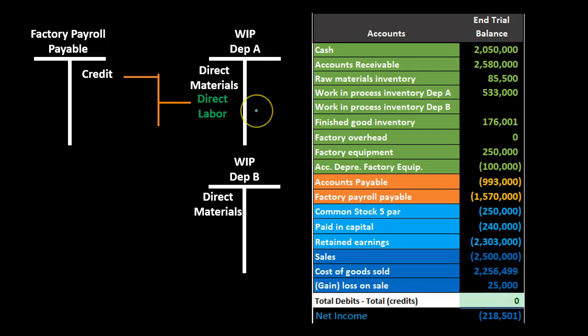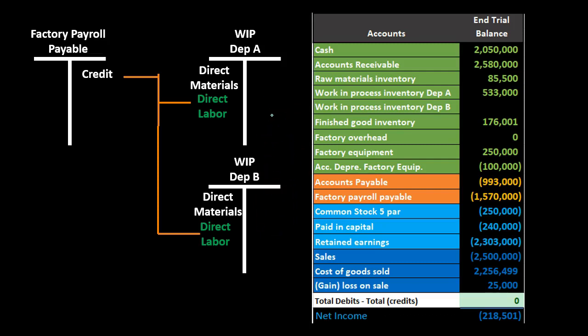Most of the labor will probably go to Department A, since that's where most of the work is done. In a process cost system, labor may be relatively small because the process may be largely automated. However, Department B will also have some direct labor. The majority goes to A where conversion occurs, and the rest to B.